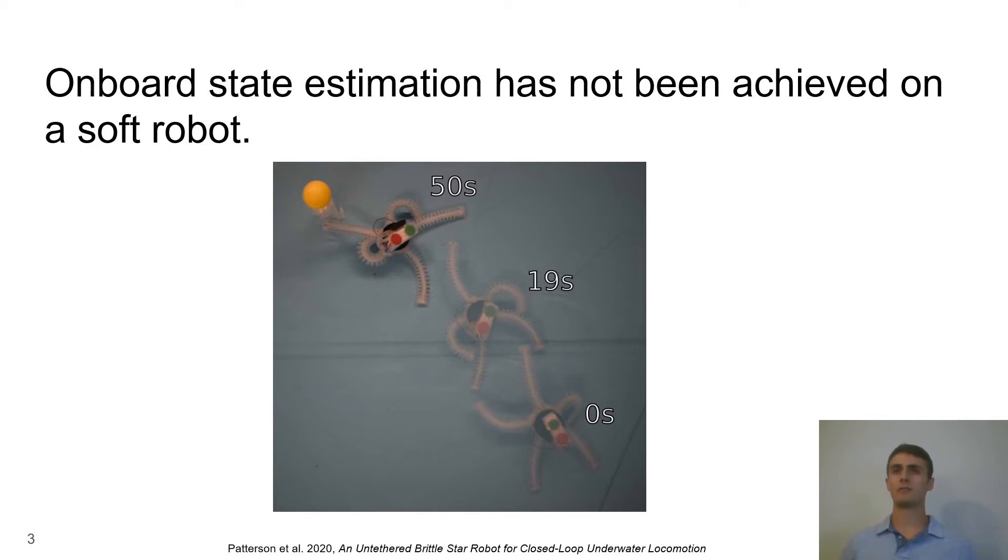In the image shown on the slide, researchers created a soft robot that was capable of state estimation and closed loop control to track the location of an orange ball. However, this system required an off-board mounted computer vision algorithm.